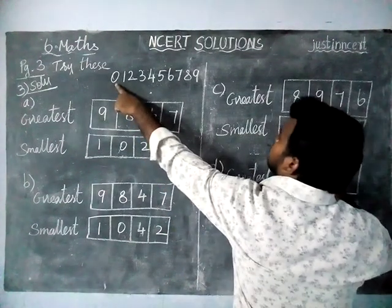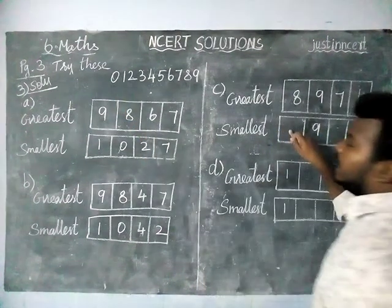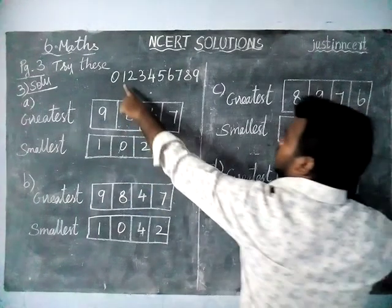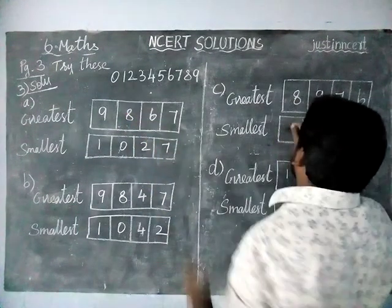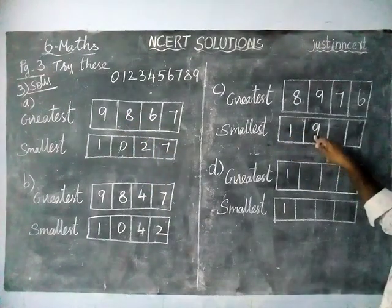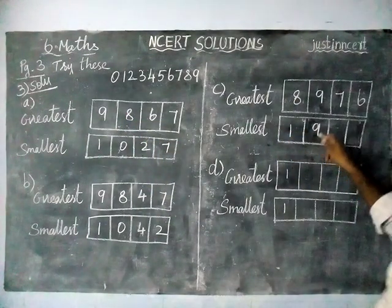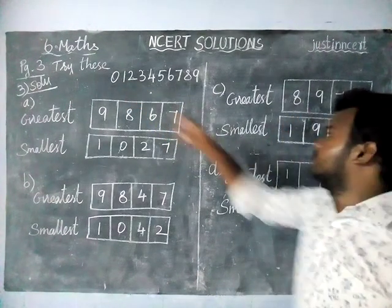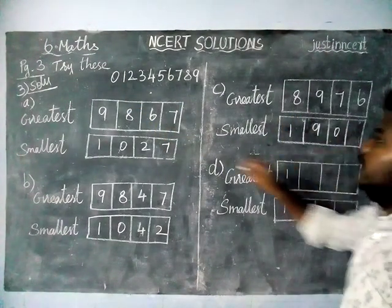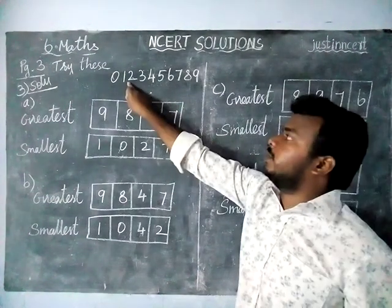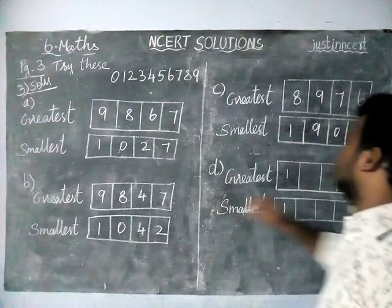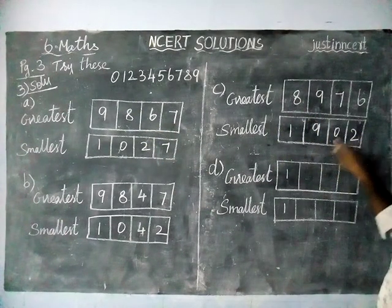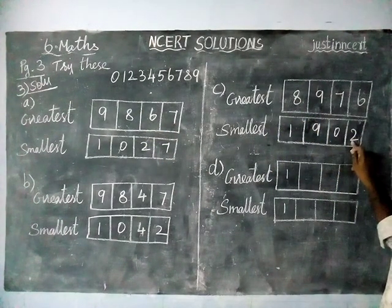For the smallest number in option C, the smallest available digit is 1, then 9 is already placed in the hundreds position, then 0, and next is 2. So 1,902 is the smallest number.